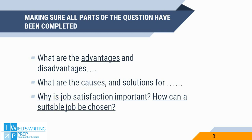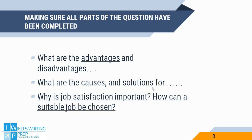Being able to identify how many parts a question has and how to answer them is very important. Let's look at these three questions. 'What are the advantages and disadvantages?' Here we have to write about advantages and disadvantages — notice the S, so we need more than one advantage and more than one disadvantage, meaning at least four points in total. Similarly, 'What are the causes and solutions?' requires more than one cause and more than one solution.